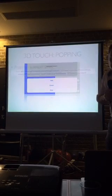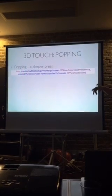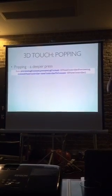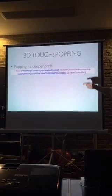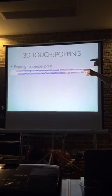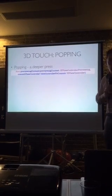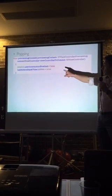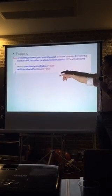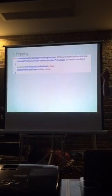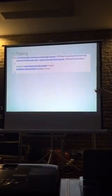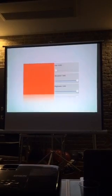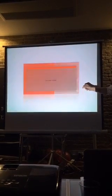The final part of peek and pop for ChromaTouch is when the user does a deep press and they get presented with a full screen preview of their color. So I implement previewingContext:commitViewController, and that does very little. All it has to do here is turn off user interaction and hide the stack view that has those three sliders for hue, saturation, and lightness. And with that, we can go peek and pop.